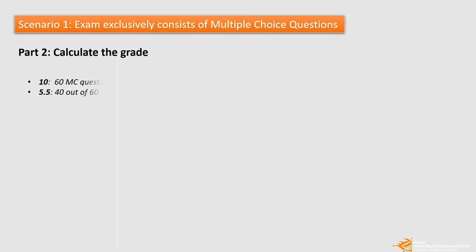The second part, what we need to do is to calculate the grade of this exam. So first, we know if a student answers all the questions correctly, his grade should be 10. And if the student answers 40 questions out of 60, which is the passing threshold, then his grade is 5.5. We use a linear regression equation to standardize the grade.